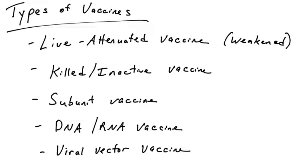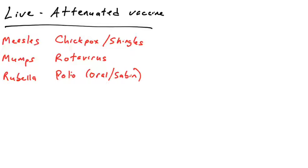Let's start off with live attenuated vaccines, which are really the gold standard for vaccines. They seem to produce the best immune response and the best protection, most likely because they are in fact a real infection. Examples include measles, mumps, rubella, chickenpox, shingles — some versions of those vaccines — rotavirus vaccines, and the oral polio vaccine.